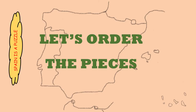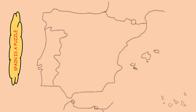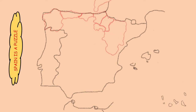Now we are going to order the different pieces: Galicia, Asturias, Cantabria, País Vasco, Navarra, La Rioja, Aragón, Cataluña.